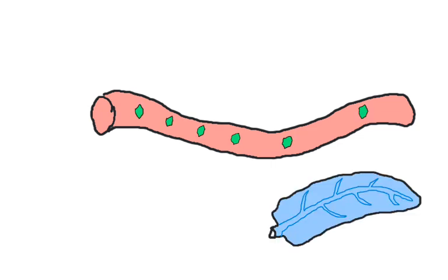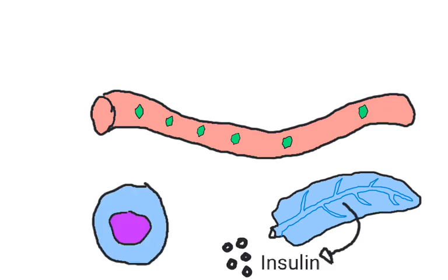As blood glucose levels rise, the pancreas secretes insulin. Insulin binds to insulin receptors found on many cells throughout the body, triggering the movement of glucose transporters to the plasma membrane. This removes glucose from the blood and brings it into the cell to be used as energy or stored as macromolecules, thereby lowering blood glucose.